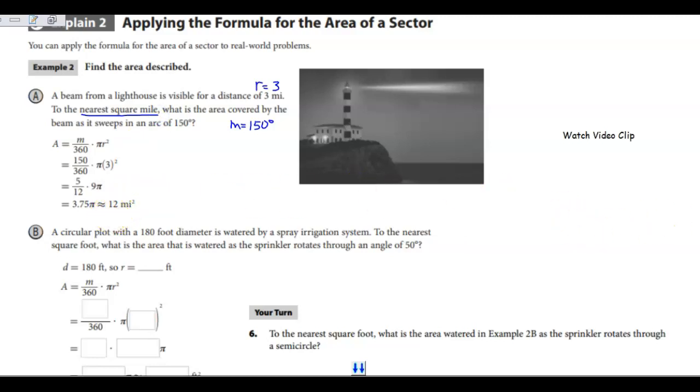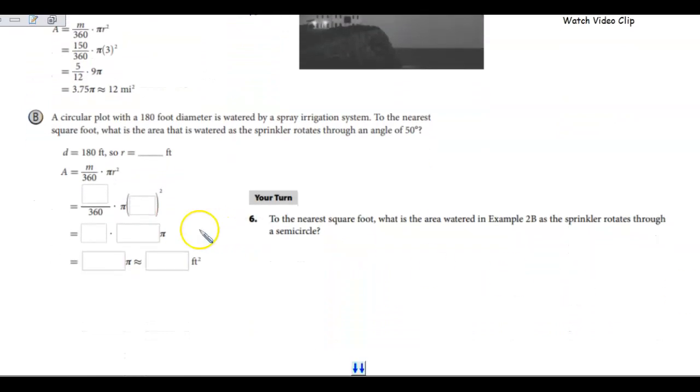All right, let's take a look at B. A circular plot with a 180-foot diameter is watered by a spray irrigation system. To the nearest square foot, what is the area that is watered as the sprinkler rotates through an angle of 50 degrees? Well, first of all, it tells me it's a 180-foot diameter, and so half of 180 is 90. So my radius is 90 feet.